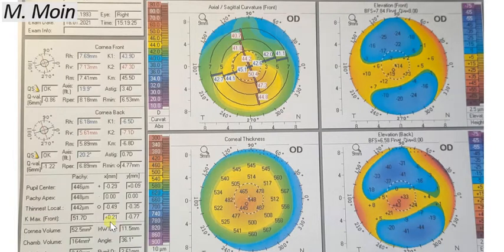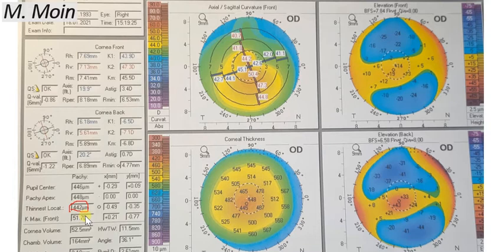On the right eye topography, the first parameter to assess is Kmax — a value above 48 is suggestive of keratoconus, and here it is 51.7. Next, look at the pachymetry at the thinnest location: it is 442 microns, well below the normal of 550. Also assess the displacement of the thinnest point from the x- and y-axes: it is minus 0.49 and plus 0.35, indicating how far inferiorly and laterally the cone apex has shifted.